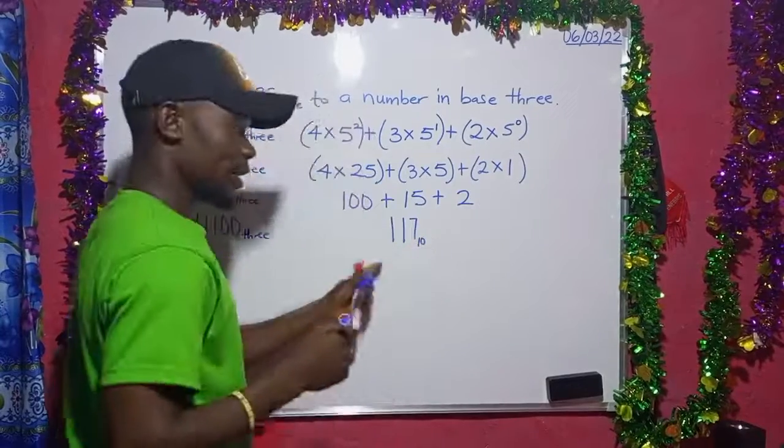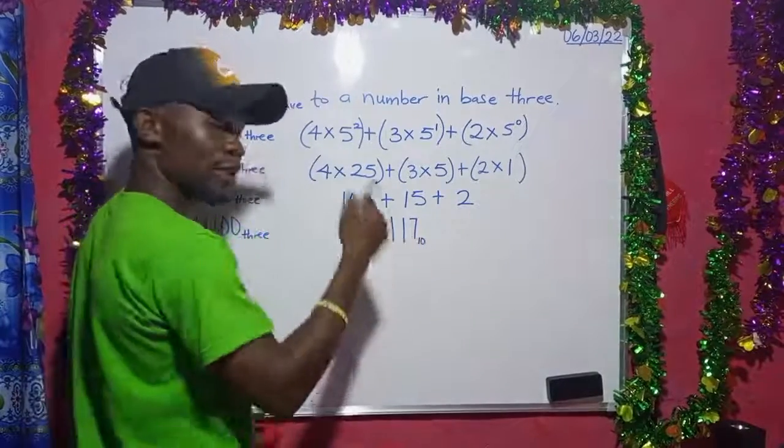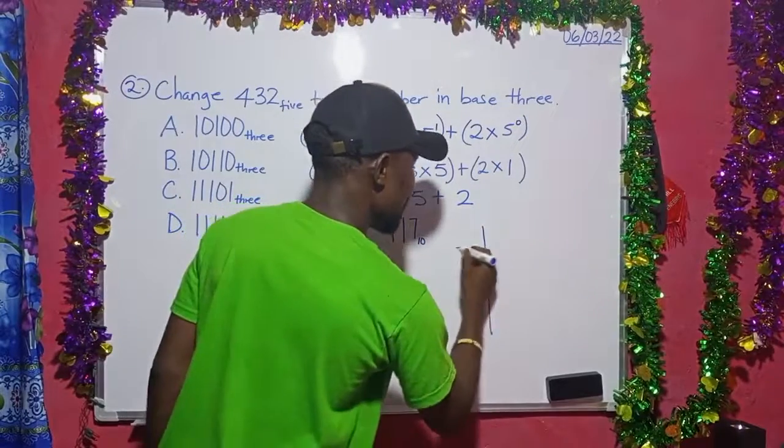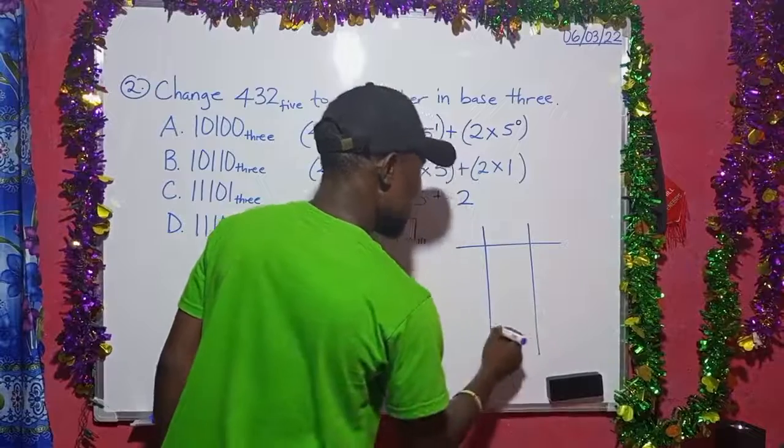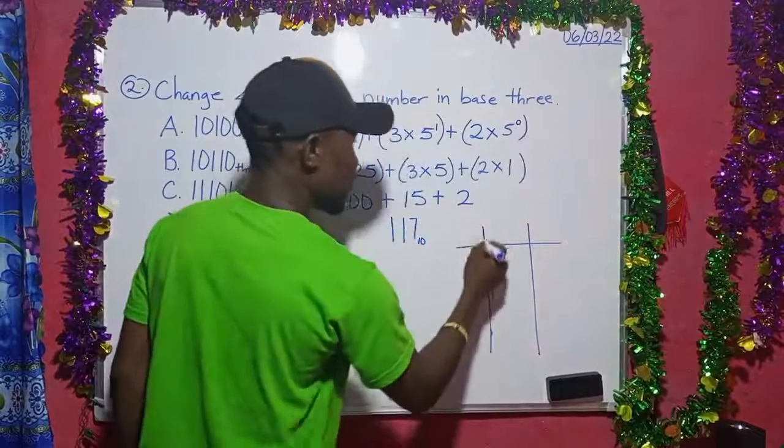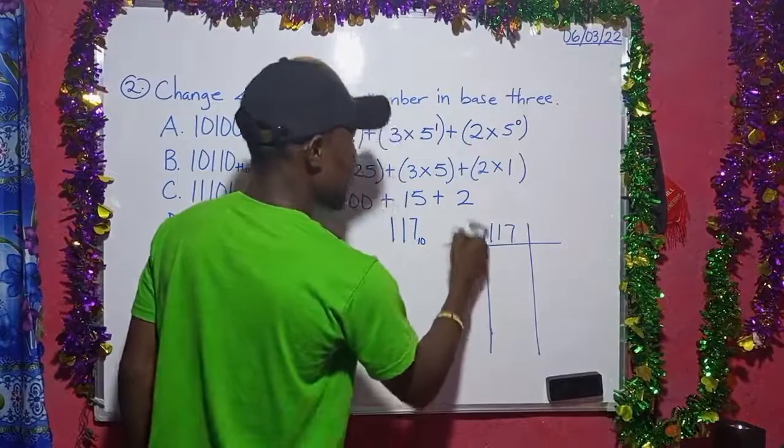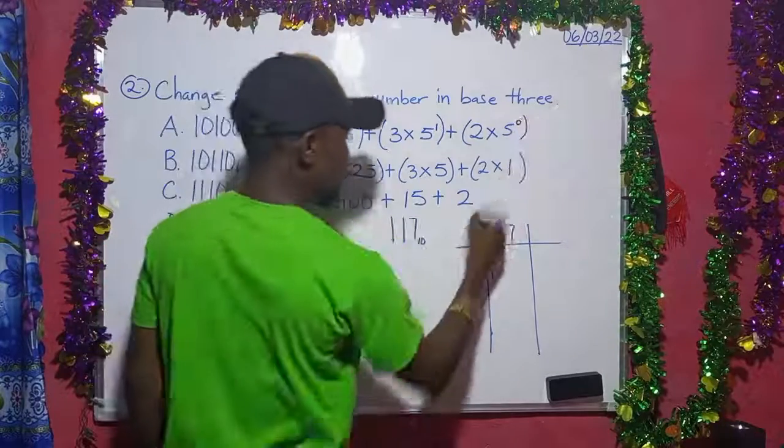So now we are converting here to base 3. 117 in base 10. So we can now convert to the desired base. The desired base here is 3. So we can bring 117 and divide by 3.